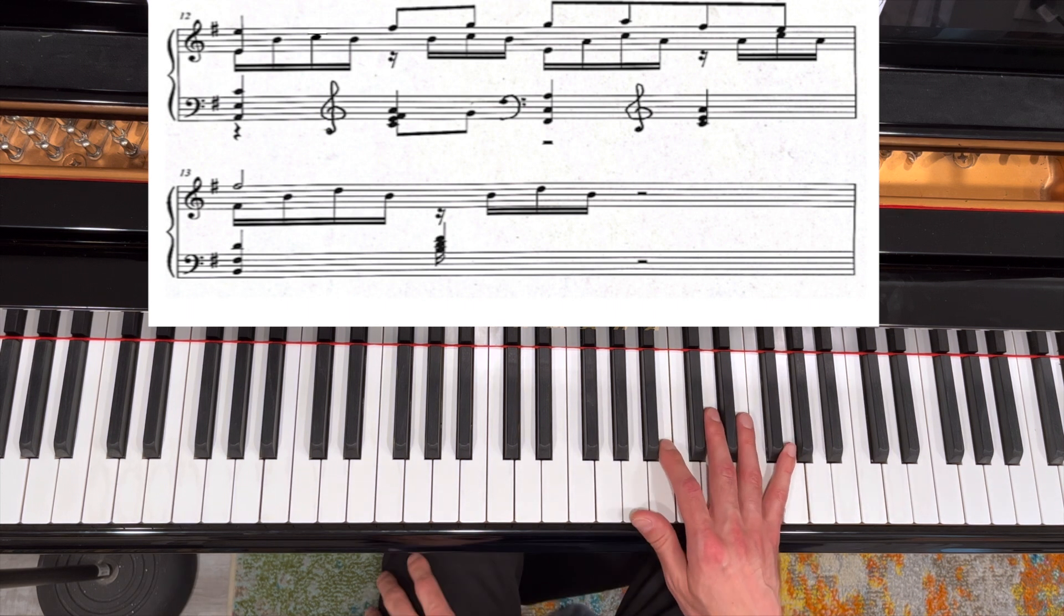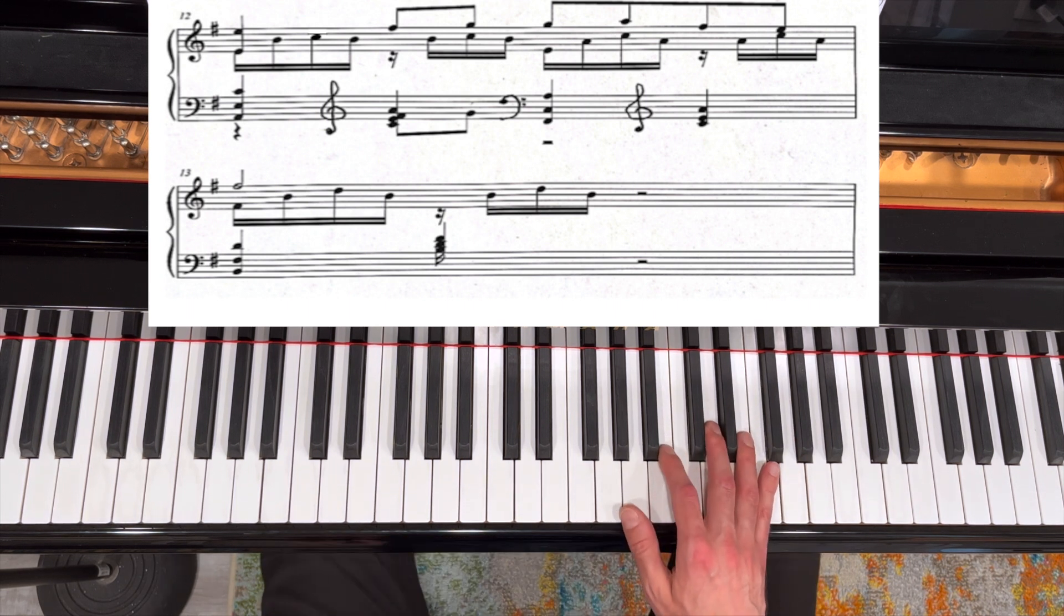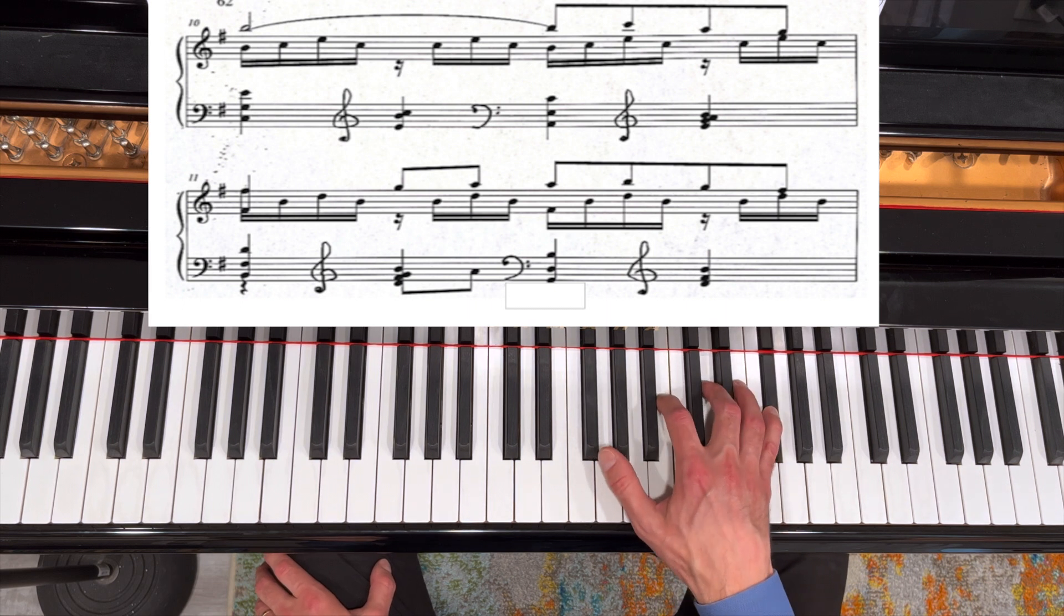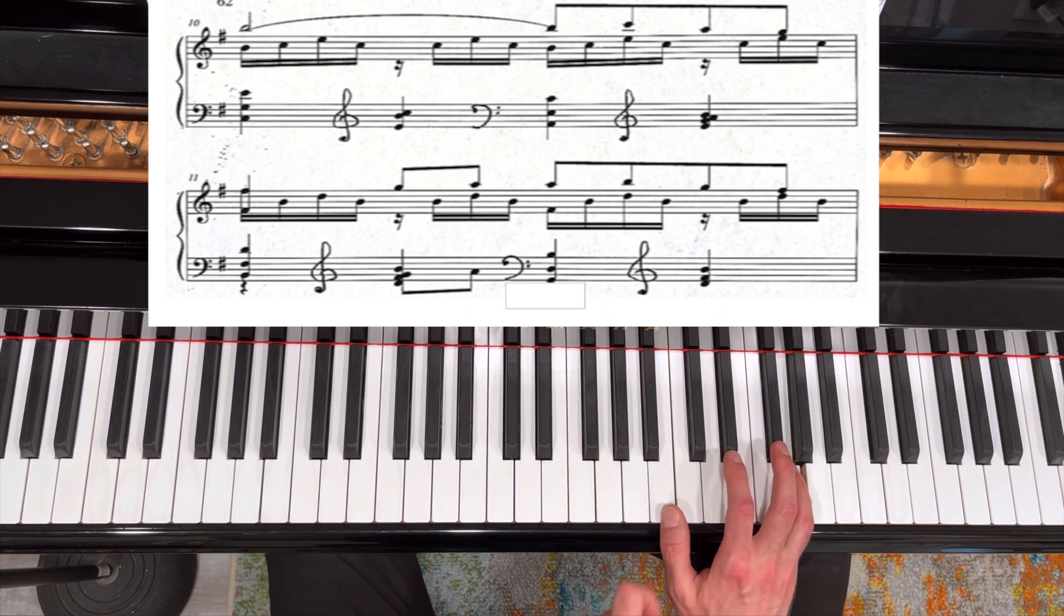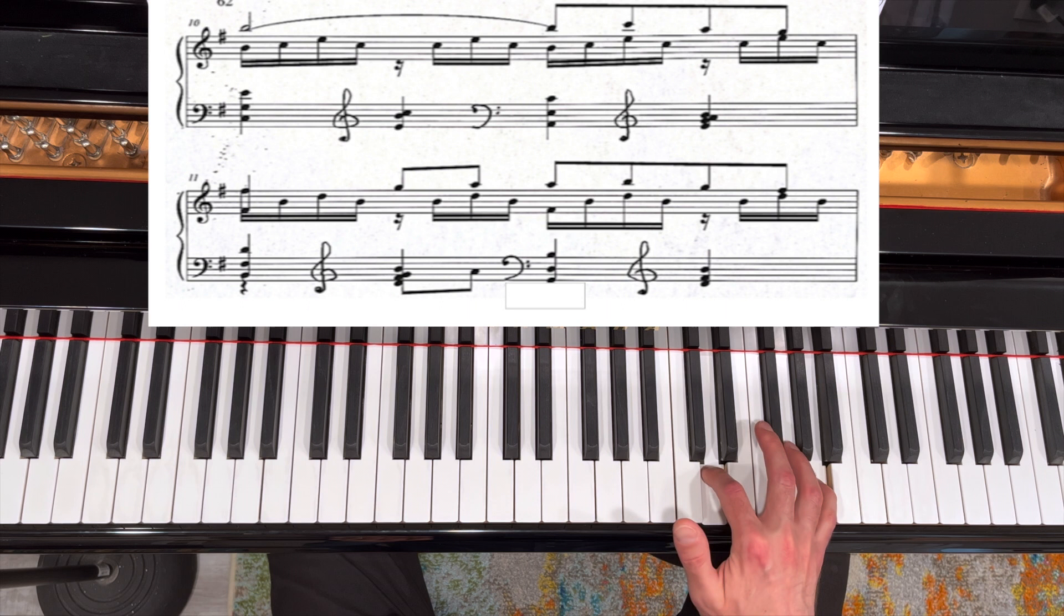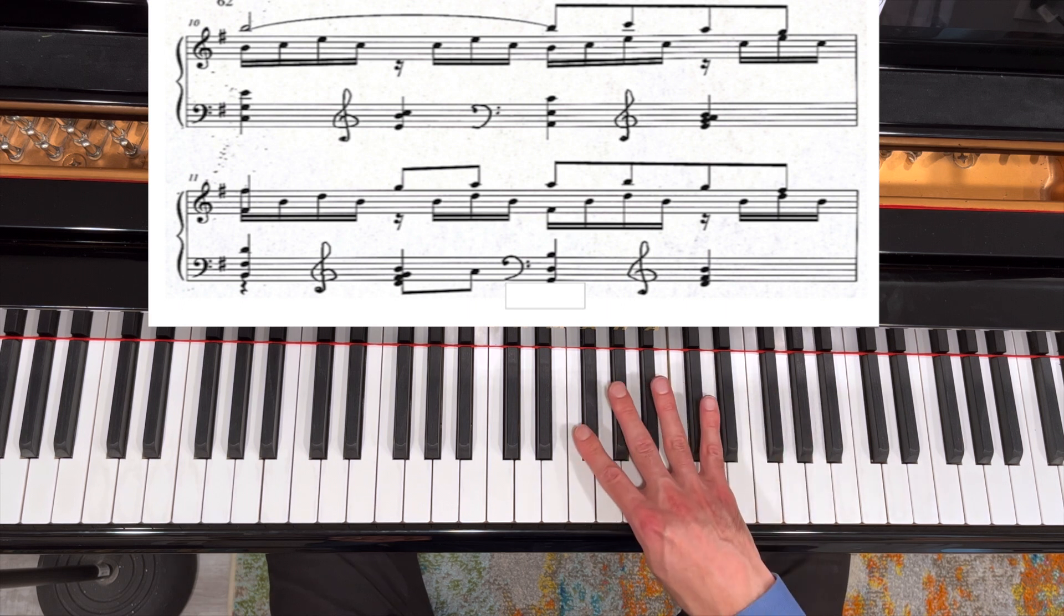Also, I wanted to share my fingerings in the right hand, measure 63, 64. So this is the omitted G, omitted A. And then I'm crossing over to the F sharp.